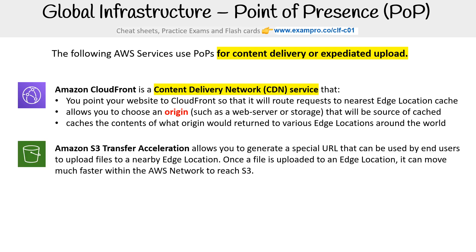Then you have Amazon S3 Transfer Acceleration. This allows you to generate a special URL that can be used by end users to upload files to a nearby edge location. Once a file is uploaded to an edge location, it can move much faster within the AWS network to reach S3.